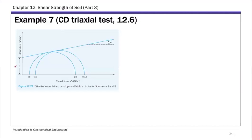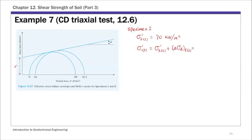For specimen 1, sigma 3 prime is sigma 3, so that's 70 kPa. And sigma 1 at failure is sigma 3 prime plus the deviator stress at failure for specimen 1. That's 70 plus 130, which gives 200 kPa, or kilonewtons per meter squared.